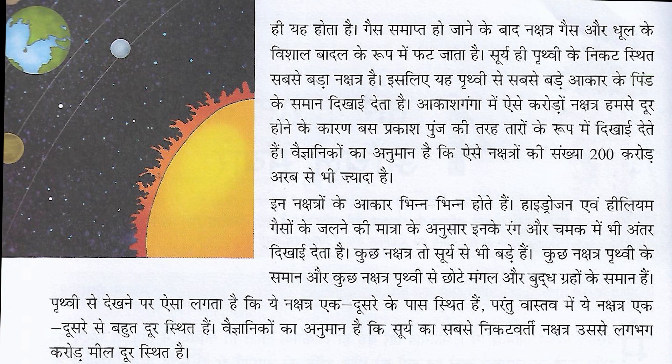आकाश गंगा में ऐसे करोणों नक्षत्र हमसे दूर होने के कारण बस प्रकाश पुंज की तरह तारों के रूप में दिखाई देते हैं। वैज्ञानिकों का अनुमान है कि ऐसे नक्षत्रों की संख्या 200 करोड़ से भी ज्यादा है। (In the galaxy, crores of such nakshatras appear to us merely as points of light — as stars — because of their distance. Scientists estimate that the number of such nakshatras is more than 200 crore/2 billion.)